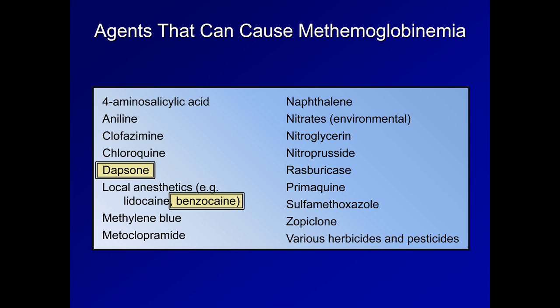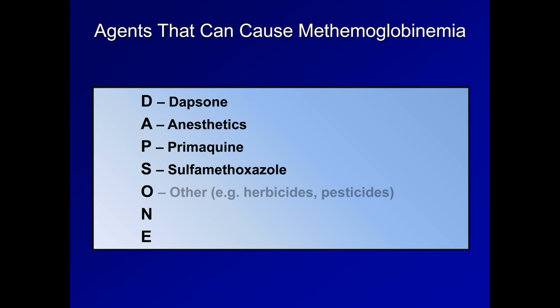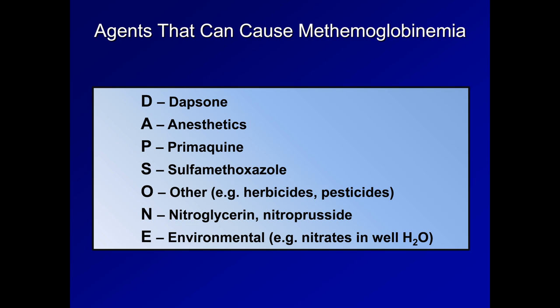While this list may be too long and obscure to bother memorizing, you should remember that the majority of cases of acquired methemoglobinemia, at least in the United States, are due to either dapsone or benzocaine, the latter usually in the setting of bronchoscopy or a transesophageal echocardiogram. If you're really wanting to remember the whole list, however, there is a convenient mnemonic, dapsone. D is obvious. A is for anesthetics. P is for primaquine. S is for sulfamethoxazole. O is for other, such as herbicides and pesticides. N is for nitroglycerin and nitroprusside. And E for environmental, such as nitrates in well water.